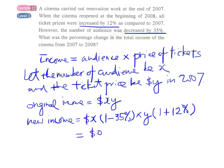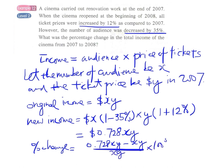This equals 0.728 times xy, showing a drop in income. The percentage change will be the new value 0.728xy minus the original value xy, divided by the original value xy, then multiplied by 100 percent. This equals minus 27.2 percent.